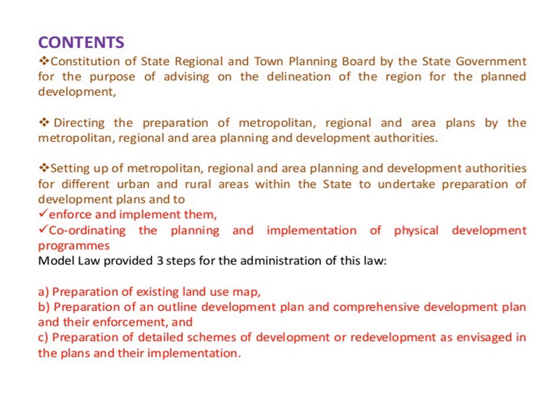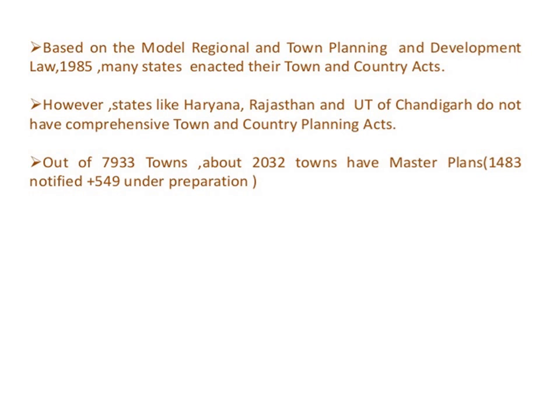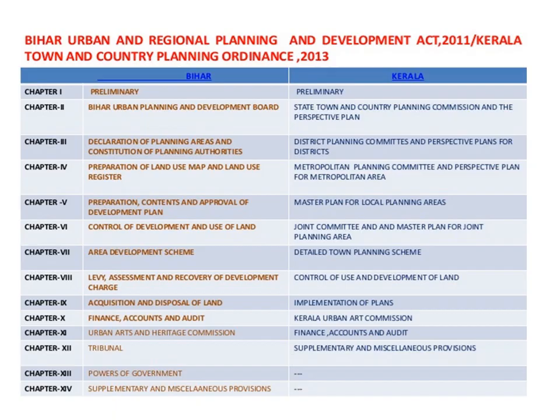Based on the Model Regional and Town Planning Development Law 1985, many states enacted their town and country acts. However, states like Haryana, Rajasthan and Uttar Pradesh do not have comprehensive town and country planning acts. Out of 7,933 towns, about 2,032 towns have master plans. This slide shows the various chapters involved in the urban and regional planning of Bihar and Kerala states, with chapters from 1 to 14.